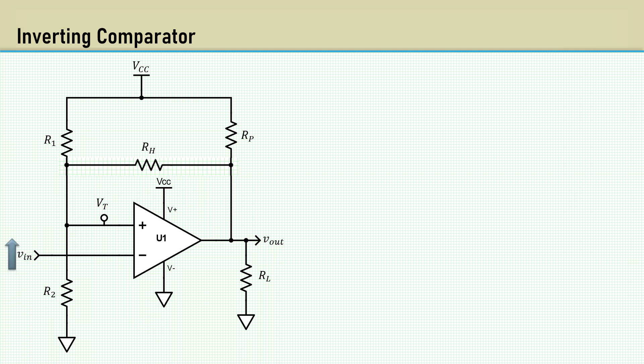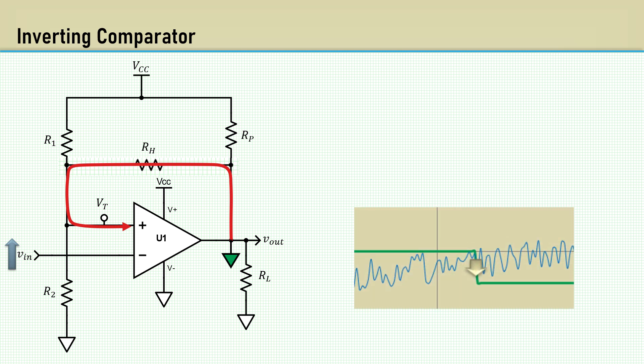When the input signal is increased beyond the reference voltage, the output sinks to the low state or ground. This connects the right side of RH to ground and lowers the reference threshold. If designed correctly, this second reference state will be below the noise and will result in a clean output. This is how hysteresis works.